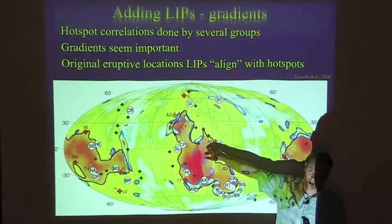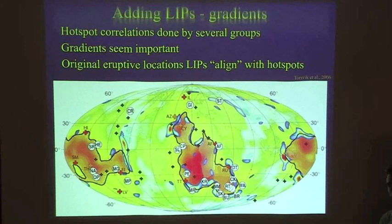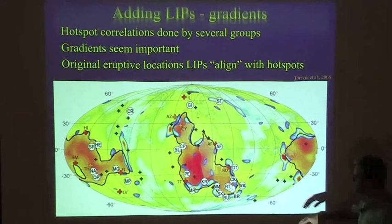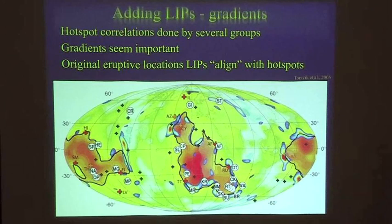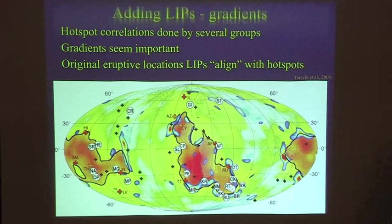These are reconstructions with the plates moving, but the assumption is that you can correlate vertically down into the mantle — not really paying attention to conduit tilt. They did look at some of the Steinberger corrections as well, I think. They were probably using an Indo-Atlantic hotspot reference frame, so the Pacific ones are all moving. But it is pretty visually stunning — maybe it means nothing, but visually this is impressive because it's centered on these structures.